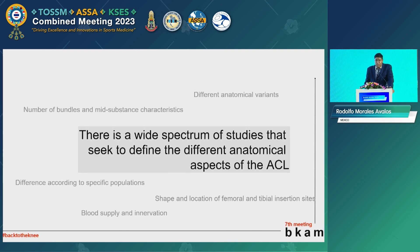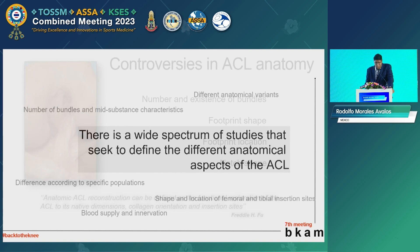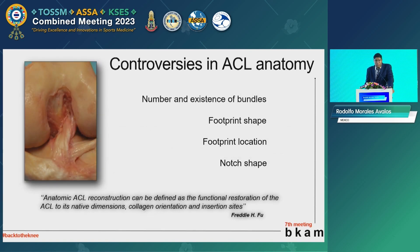The principal topics of research are the anatomical variants of the ACL, the number of bundles, the difference in ACL morphology according to specific populations, the shape and location of the femoral and tibial footprint, and the blood supply and innervation. Some of the controversies in ACL anatomy are the number and existence of bundles, the footprint shape, the footprint location, and the knot shape.